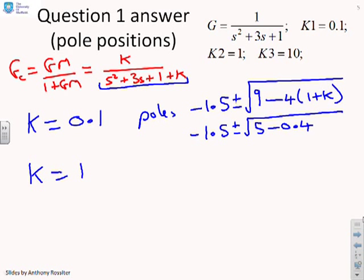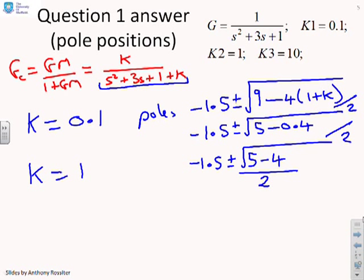If K equals 1, then we're going to get minus 1.5 plus or minus the square root of 5 minus 4. And that's, oh, I've forgotten to divide by 2, I do apologise. There should be a divide by 2 under that square root. So that minus 1.5 plus or minus root 1 over 2 is going to give you minus 1 or minus 2.